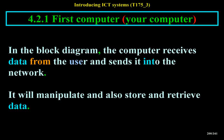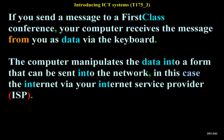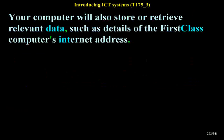In the block diagram, the computer receives data from the user and sends it into the network — it will also manipulate, store and retrieve data. If you send a message to a First Class Conference, your computer receives the message from you as data via the keyboard. The computer manipulates the data into a form that can be sent into the network, in this case the Internet via your Internet Service Provider (ISP). Your computer will also store or retrieve relevant data, such as the First Class computer's internet address.